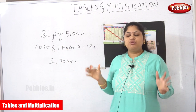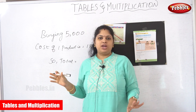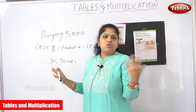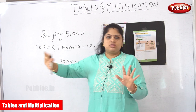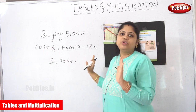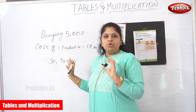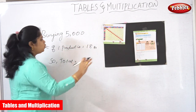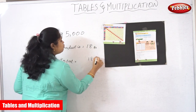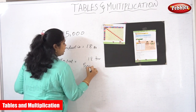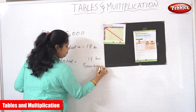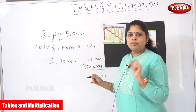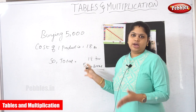If you only know addition and subtraction, subtraction is not going to help here. Only addition can help you. But if you only know addition, you would have to add 18 a total of 5000 times. Just think about that — adding 18 five thousand times!